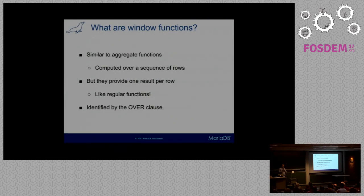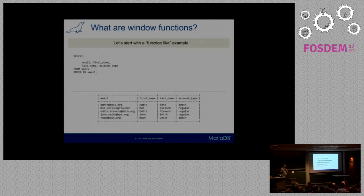Window functions are special because they behave like two different things. One, they act similar to aggregate functions in that they compute their result based on multiple rows, like sum and average. But at the same time, they do not collapse your rows. So you get one result per each entry in the SELECT statement. You can identify them with the OVER clause, which comes right after the function name.